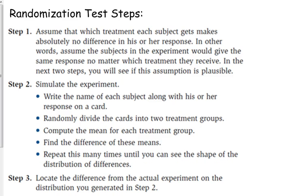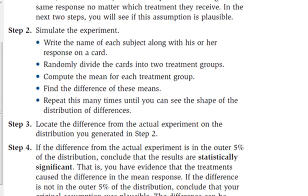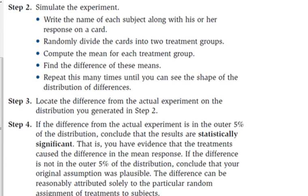Here are the steps for completing a randomization test. It is not super important that you memorize all those, but we do need to know step 3 and step 4. Step 3 says locate the difference from the actual experiment on the distribution you generated in step 2. Well, we're not going to generate it - it's going to be given. So you may want to mark that out.